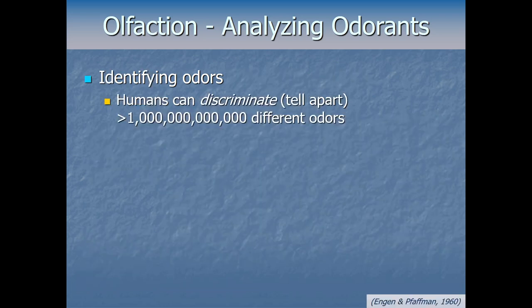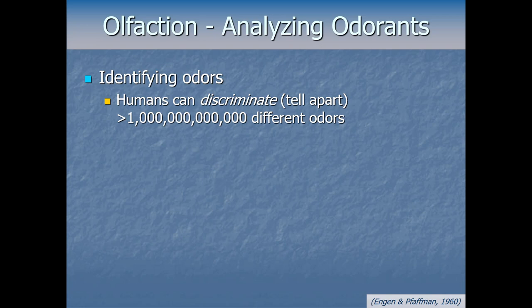Even though olfaction is one of the lesser studied senses, it's estimated that humans can discriminate something like 1 trillion different odors. Compare that to vision, where we discriminate at most a few million different colors, or audition, where we can discriminate at most about 500,000 different tones. A trillion different types of smells we could theoretically tell apart is unimaginable. However, discriminating that two smells are subtly different is not the same as identifying what a smell is.